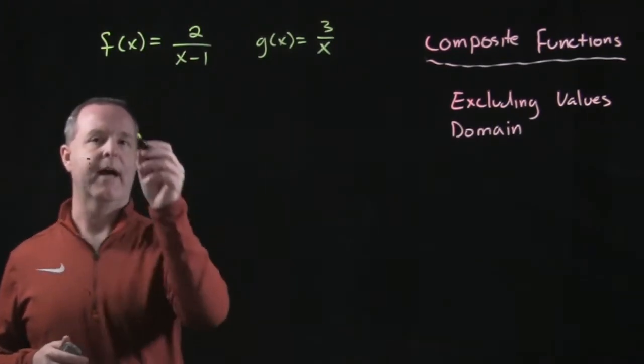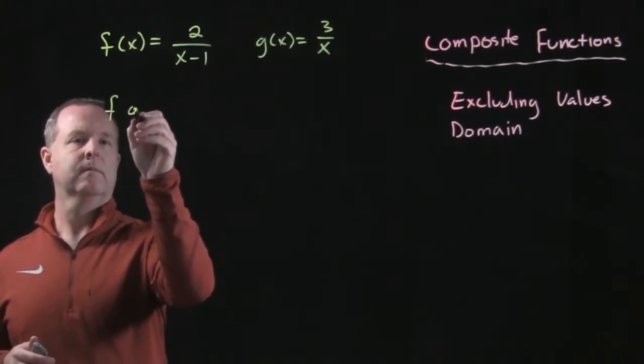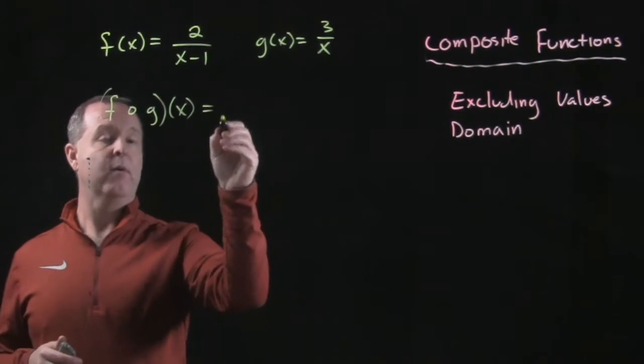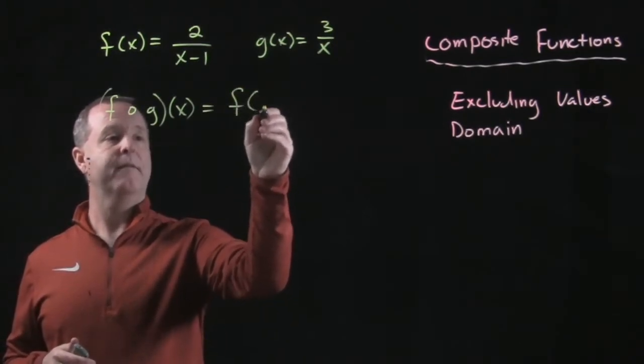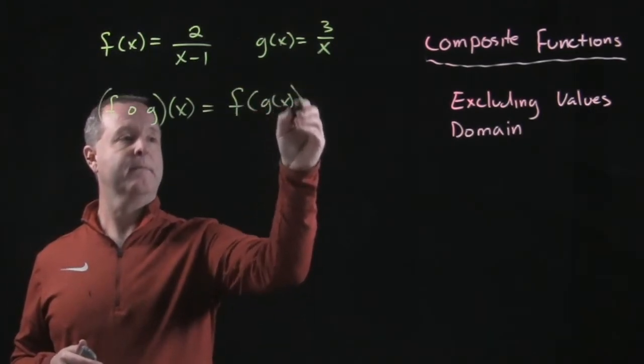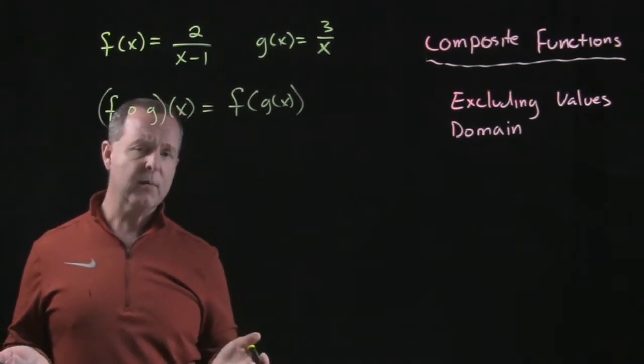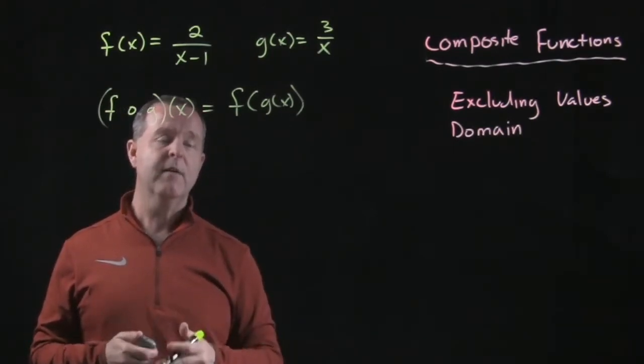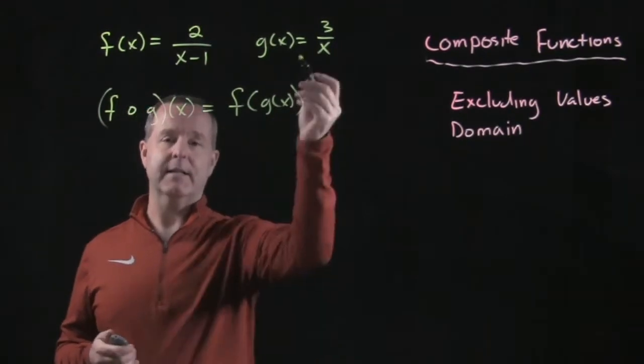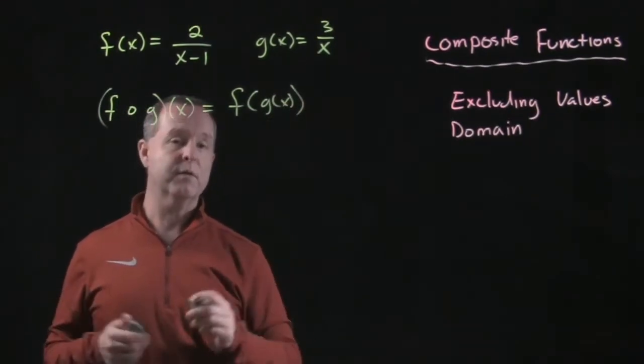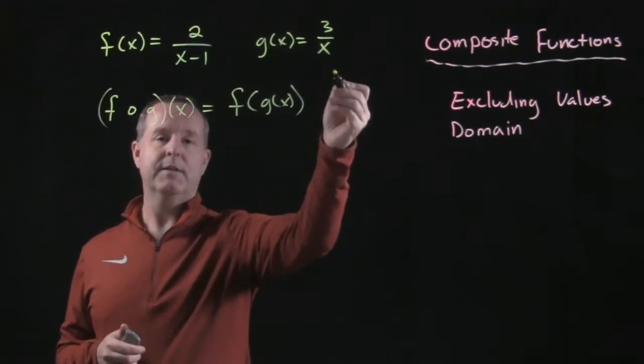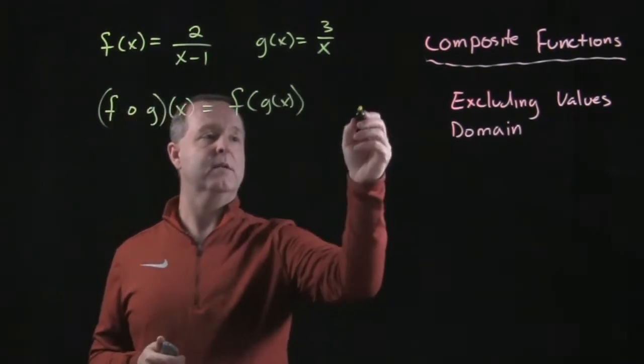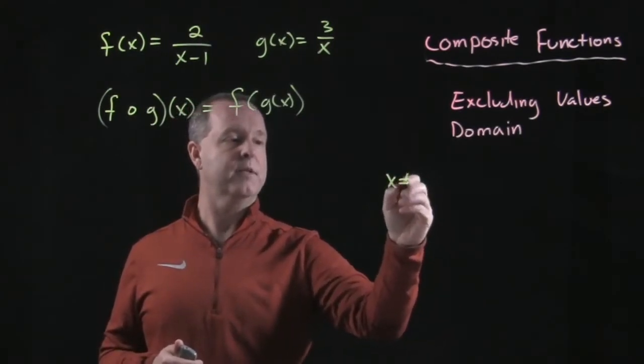We want to look at f composed of g of x, which we remember to be equal to f of g of x. The first thing we need to be careful of is we need to exclude from the domain all values that make g of x undefined. So what are those values that make g of x undefined? Zero. We cannot divide by zero in g of x, so we have to exclude x equals zero.